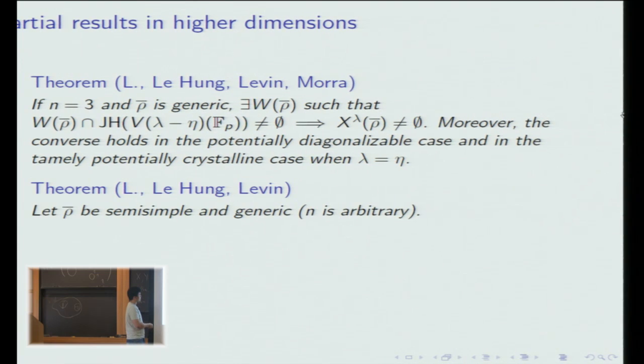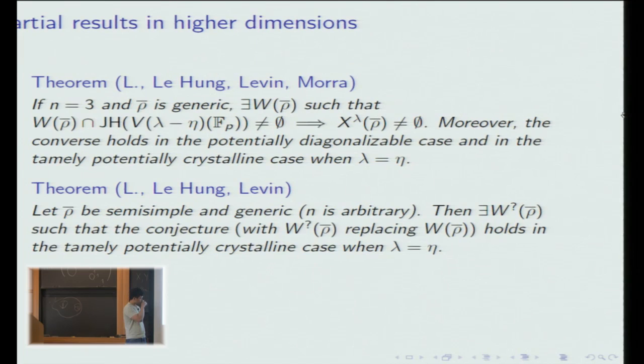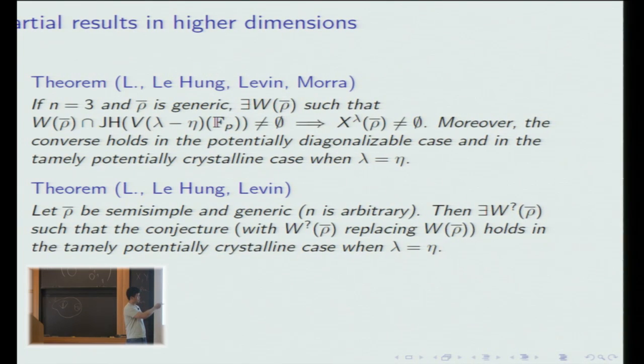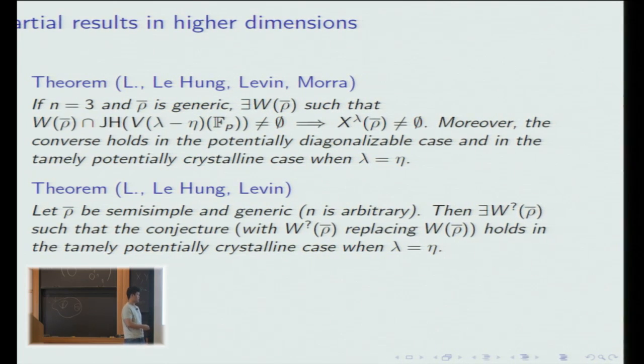Another result: if ρ̄ is semi-simple and generic, and now n will be arbitrary, there exists some set W? which is conjecturally actually W(ρ̄), and the conjecture holds in the tamely potentially crystalline case.